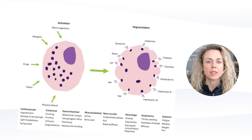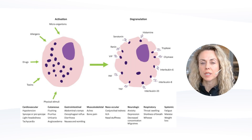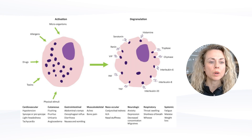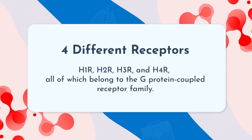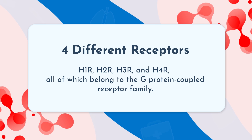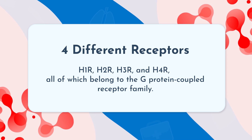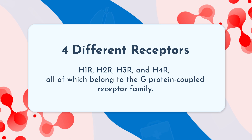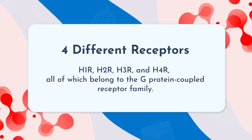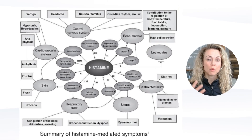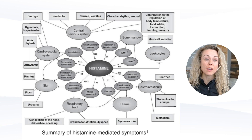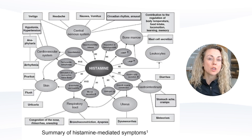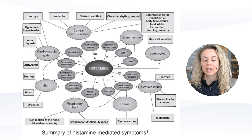Mast cell activation and histamine release can be triggered by microorganisms, allergens, drugs, toxins, and physical stimuli. Because there are four different histamine receptors located throughout the body, you can have very widespread systemic effects. Conversely, one person might experience allergy symptoms like sneezing and wheezing, while someone else suffers from extreme anxiety — which I'll discuss later in the presentation.